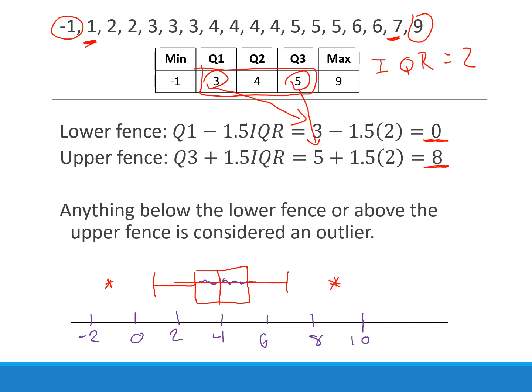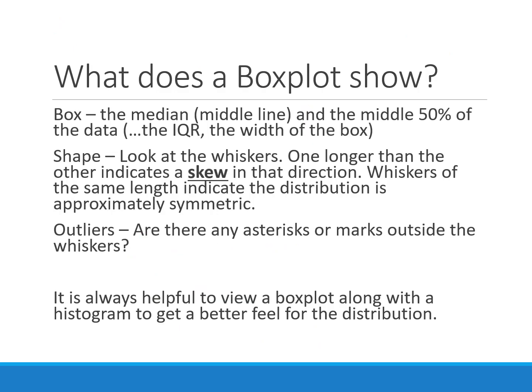We want a title on the box plot based on the context — maybe something like 'number of fish in a fish tank.' When we look at the graph, the box shows the middle 50% of the data, and the middle line is the median. The shape is indicated by the whiskers: if they're about the same length the distribution is symmetric; if one is longer it's skewed toward that side. Outliers are denoted by asterisks not attached to the whiskers. Ideally, we'd pair a box plot with a histogram to better understand the shape.